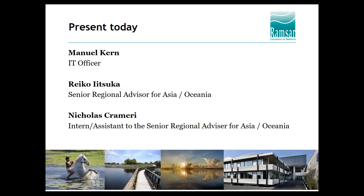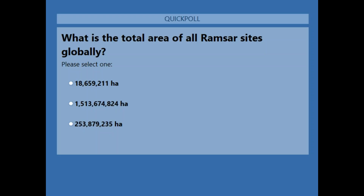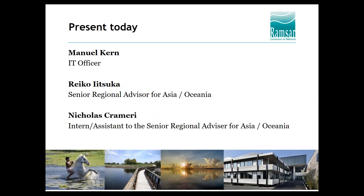Before we move on, I'd like to ask a warm-up question. You should see a poll coming up shortly. The question is: what is the total area of all Ramsar sites globally? Please click on the answer you think is correct. The majority says it is 253,879,235 hectares, which is the correct answer. Thank you for participating. After this webinar you will know where to find this answer.